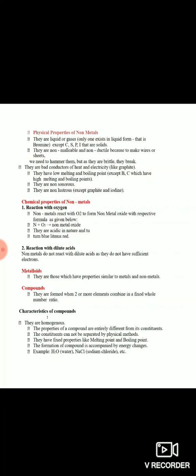Compound basically kya hote hain - jab do ya do se zyada elements ek doosre ke saath fixed whole number ratio mein combine karte hain to use hum compound bolte hain. Sabse simple example hai water - water ka formula hota hai H₂O, to water ek compound hai jo two atoms of hydrogen aur one atom of oxygen ke combination se bana hai. Fixed whole number ratio ka meaning hai ki water chahe mere ghar ka ho ya aapke ghar ka, har case mein water mein do hydrogen aur ek oxygen hi hoga.